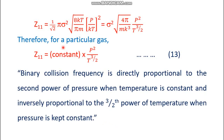From equation 13 we can conclude: binary collision frequency Z11 is directly proportional to the square of pressure when temperature is kept constant, and inversely proportional to the 3/2 power of temperature when pressure is kept constant — that is, Z11 ∝ p² (constant T) and Z11 ∝ T^(−3/2) (constant p).